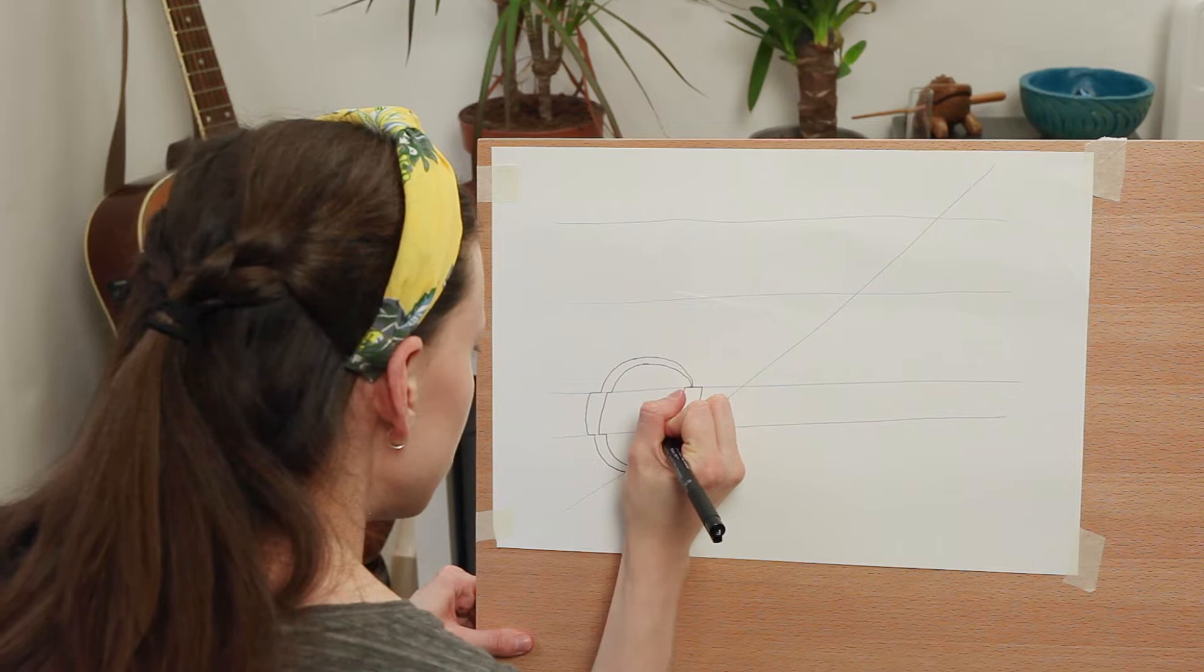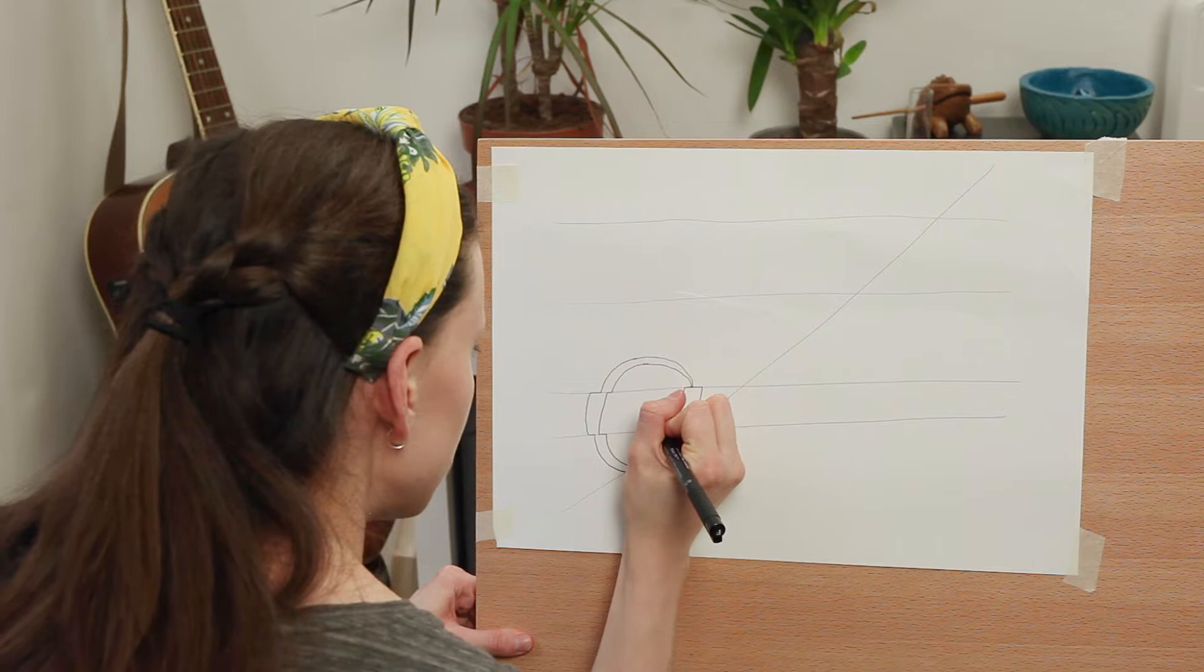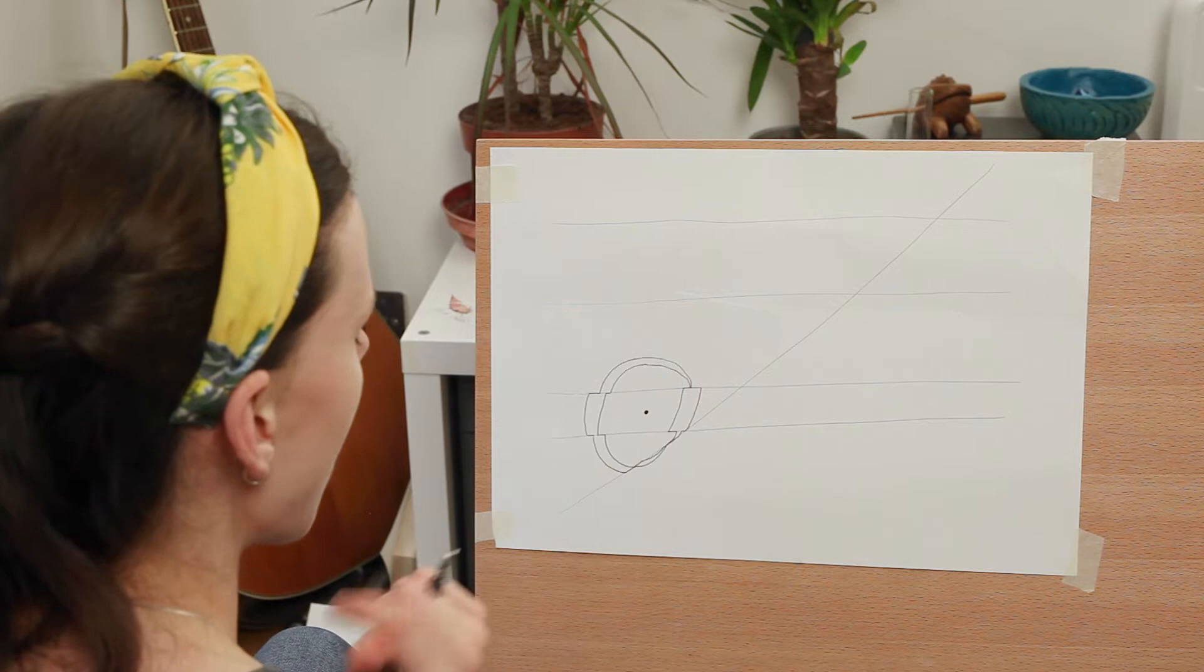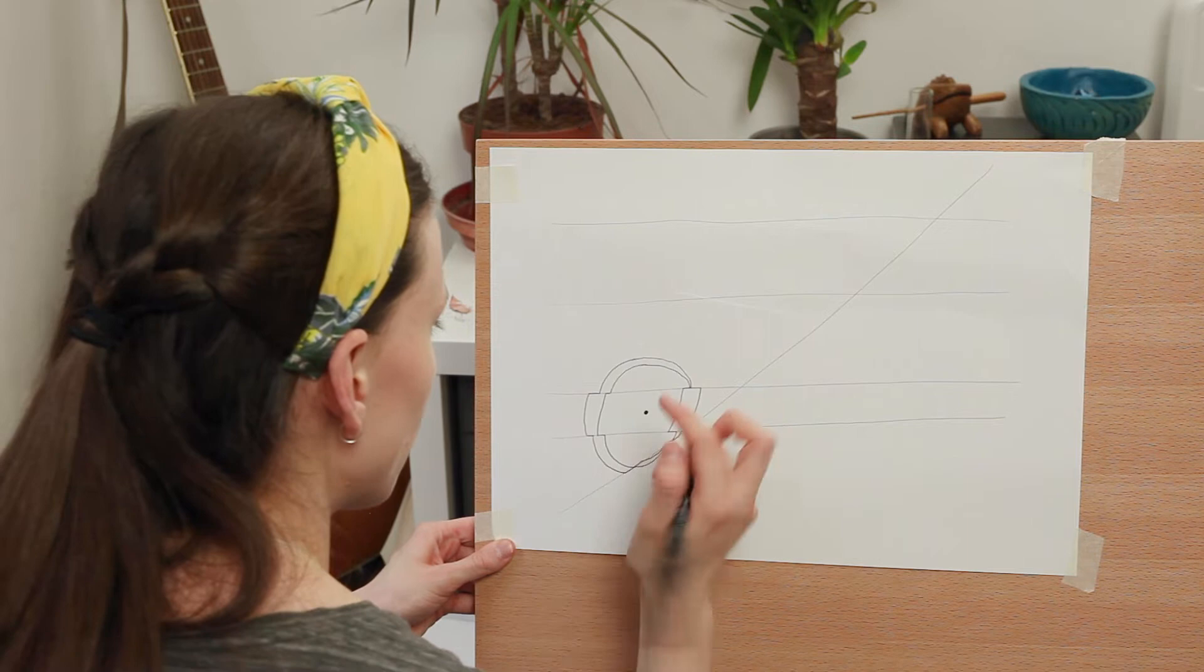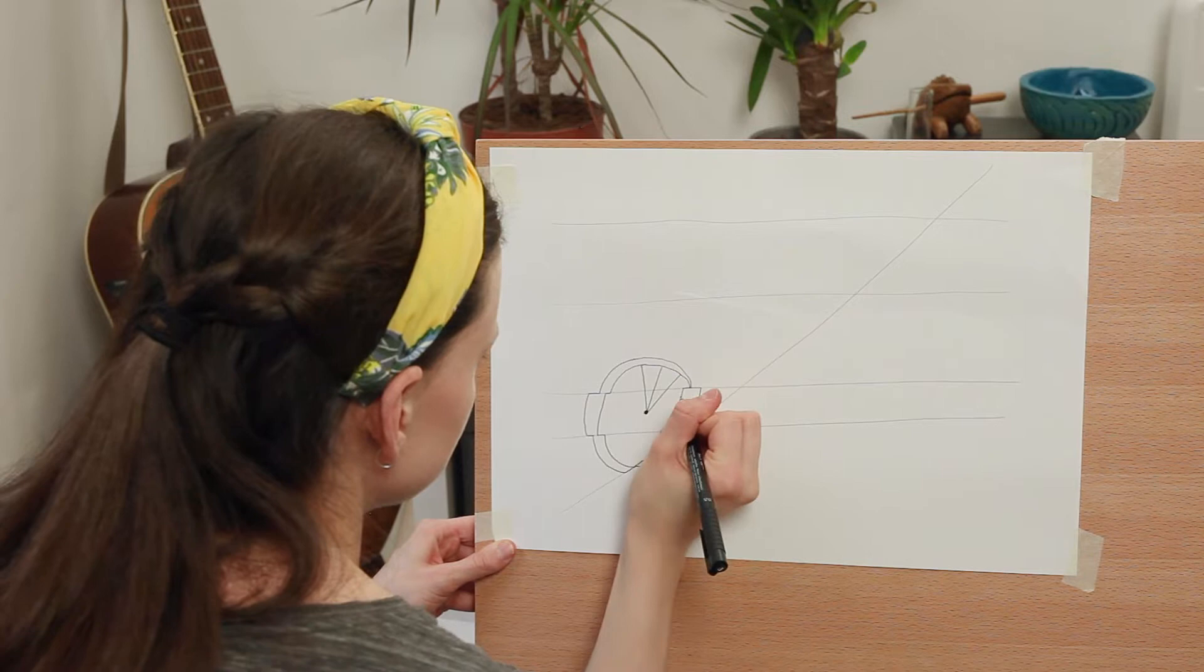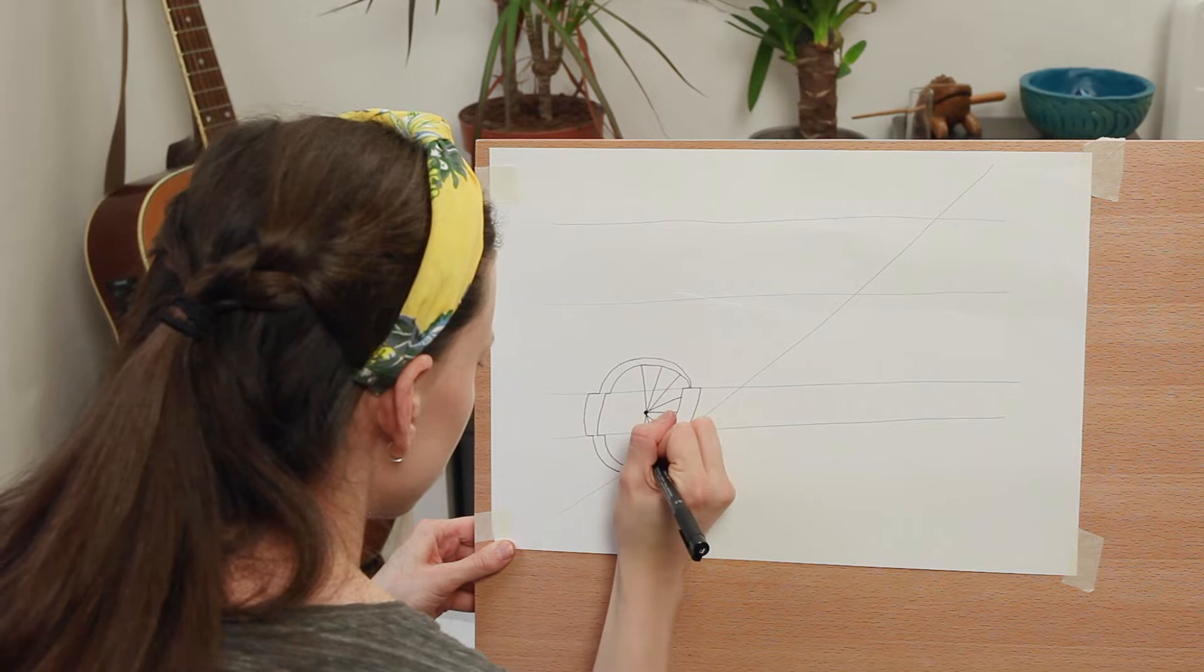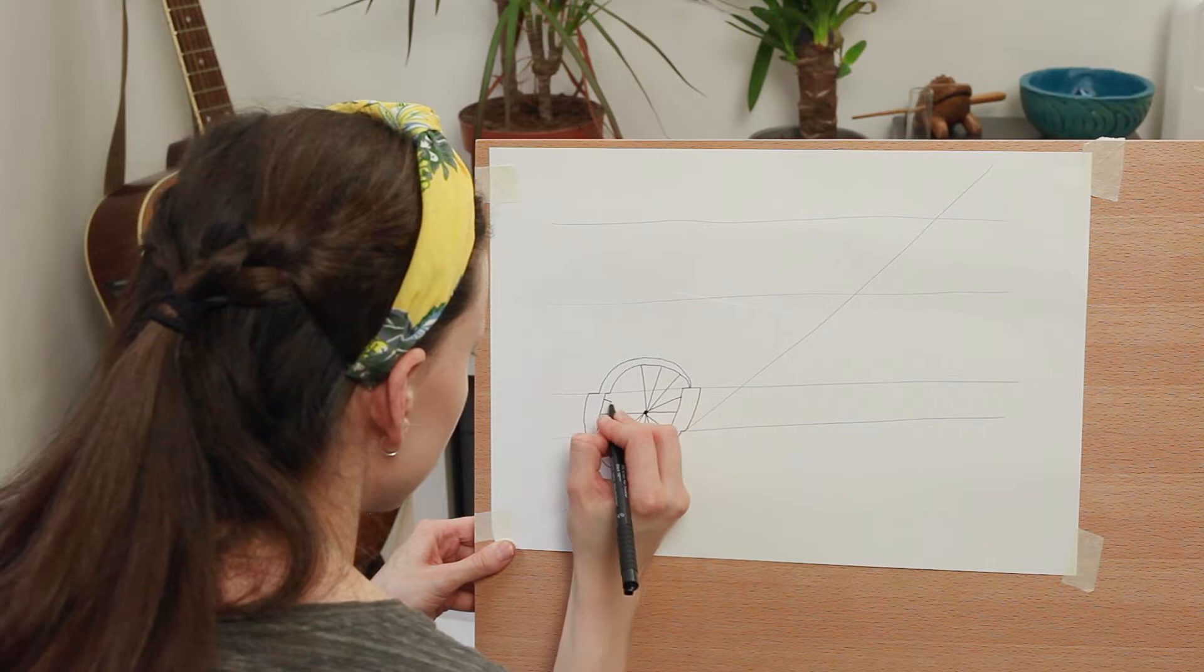I'm then going to do the spoke from the middle. So this you can either pick to go along the lines like normal. I'm going to just do straight lines because I think I want to focus my attention on the wheel on the outer rim. So I'm just going to do straight lines. And that's my wheel.